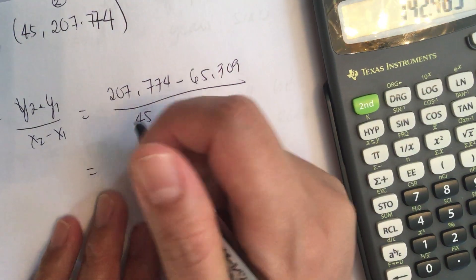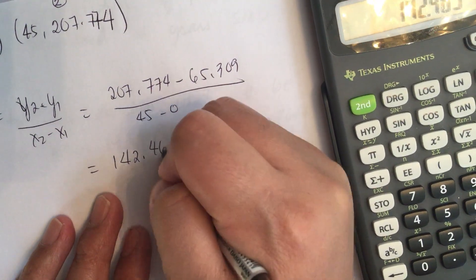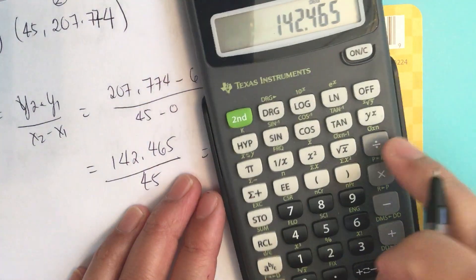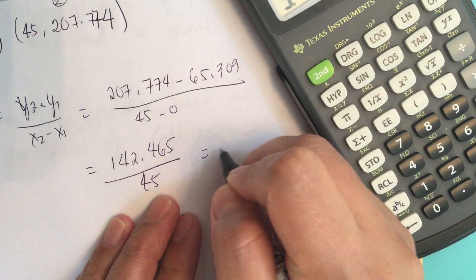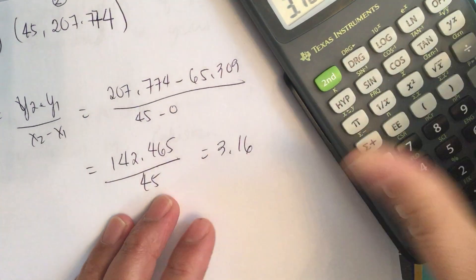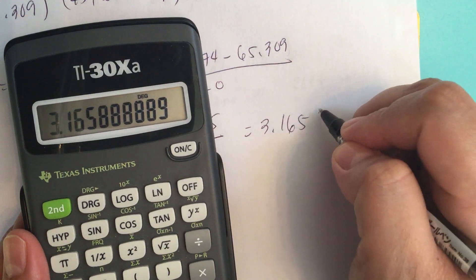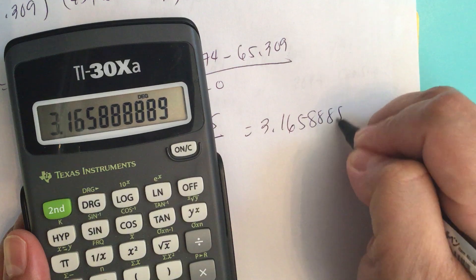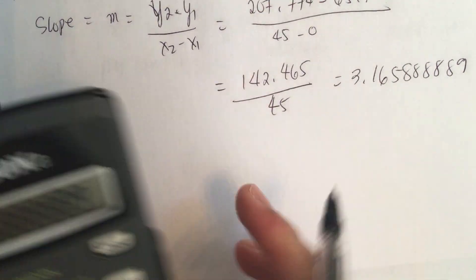This is equal to 207.774 minus 65.309, which equals, now these are in millions, so 142.465 over 45. We divide this by 45, so we have 3.165888889. This is the slope.